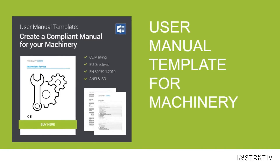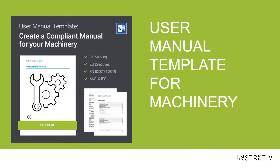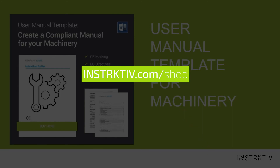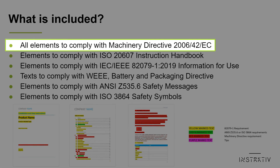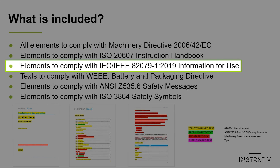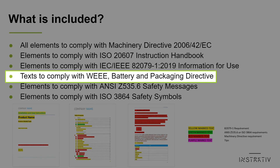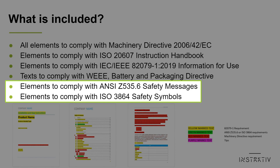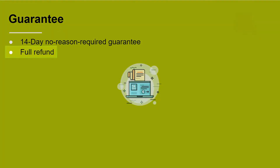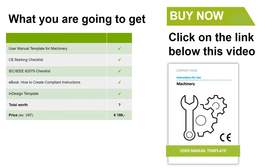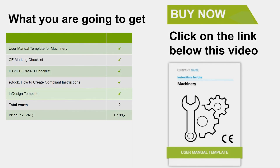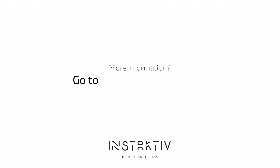If you want to save time and money you can also purchase one of our templates. Our templates contain all legally required components to create user instructions for your machinery. Just click on the link below this video to visit our web store. The template includes all elements to comply with the machinery directive, ISO 2607 on instruction handbooks, the 82079 standard, the WEEE, battery and packaging directives, and ANSI Z535.6 and ISO 3864. We offer a 14-day no-reason-required guarantee and a full refund if you're not satisfied. Additionally you'll get a CE marking checklist, an 82079 checklist, an ebook on how to create compliant user instructions, and an InDesign template.